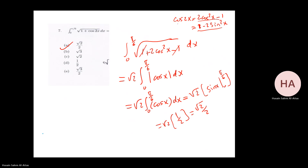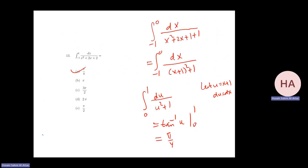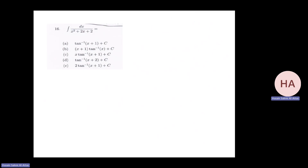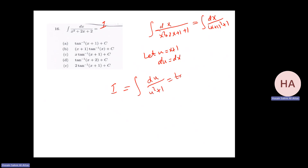For one over x squared plus two x plus two — I think we did this before. I complete the square: x squared plus two x plus two equals x squared plus two x plus one plus one, which is (x plus one) squared plus one. Let u equal x plus one, du equals dx. So I get integral of du over u squared plus one, which is tan inverse of u plus c, giving tan inverse of (x plus one) plus c.